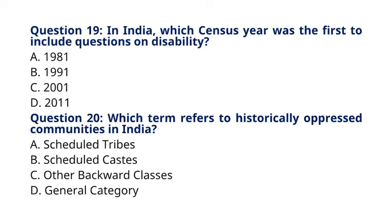Question 19: In India, which census year was the first to include questions on disability? A. 1981. B. 1991. C. 2001. D. 2011. The correct answer to question 19 is option D: 2011. Explanation: The 2011 census was the first to include questions on disability, reflecting a growing recognition of disability rights and inclusion.